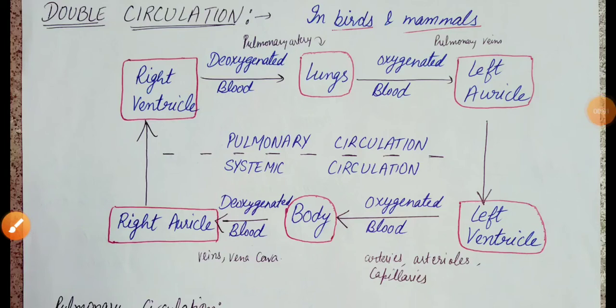Hello students, welcome back to my channel. So today we will do double circulation. We have done the structure of the human heart, and we will see how oxygenated blood and deoxygenated blood transport, how they differentiate and how they circulate in the human body. So then we will do double circulation.